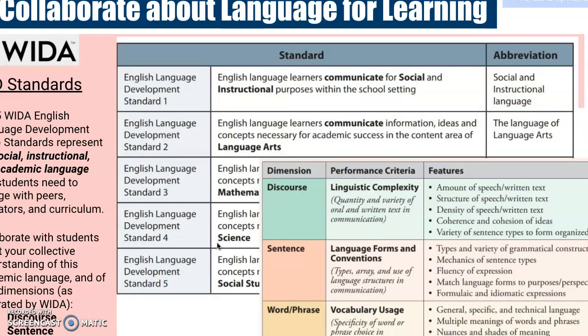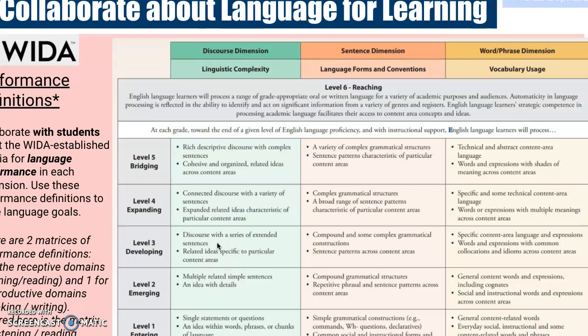WIDA's five standards represent social, instructional, and academic purposes, so all courses are covered. The academic language that students process and produce is broken down further into three dimensions. Here are more details about what a student at each level should be able to do with your class content, broken into three domains: the linguistic discourse dimension, sentence dimension, and word or phrase dimension. All of this is available to you to peruse later.